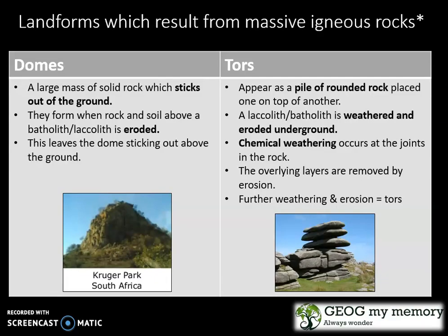The landforms which result from massive igneous rocks are domes and tors. Domes are a large mass of solid rock which sticks out of the ground. They form when rock and soil above the batholith, or laccolith, is eroded. This leaves the dome sticking out above the ground.